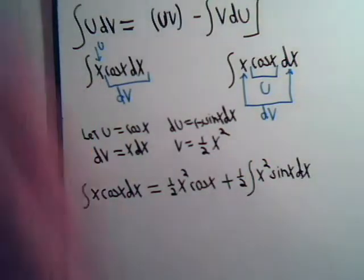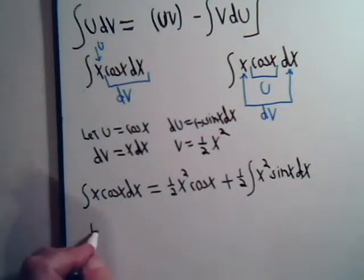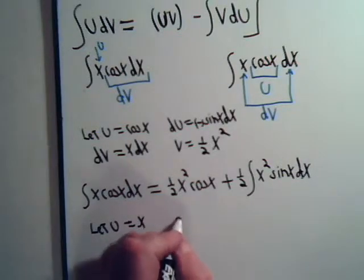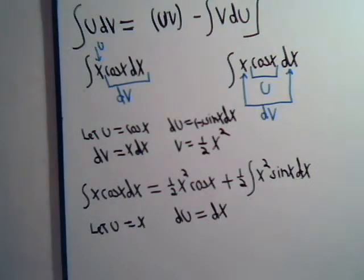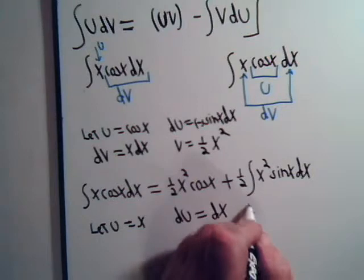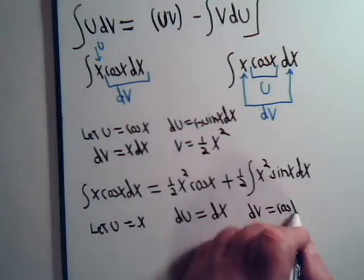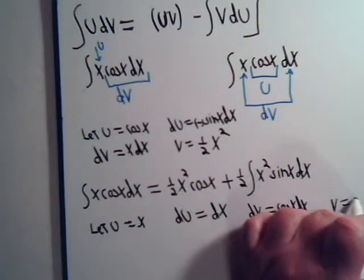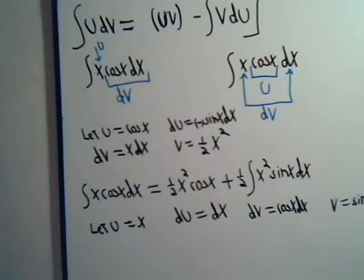Let's go back to this approach. Now we're going to say, let u equal x. So, du equals dx. Then we're saying, dV, that's the cosine of x dx. So, v will equal sine of x. The integral of the cosine is plus the sine.